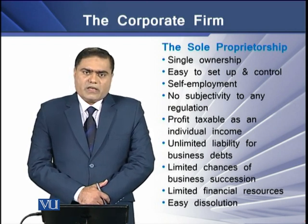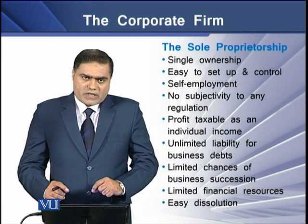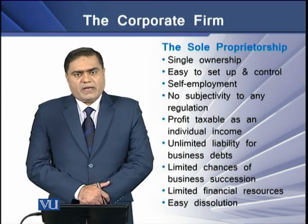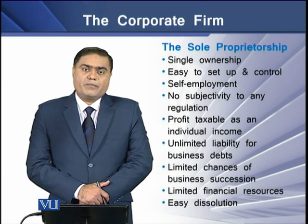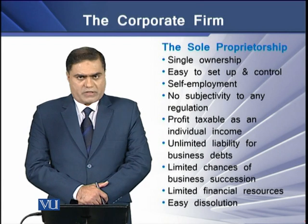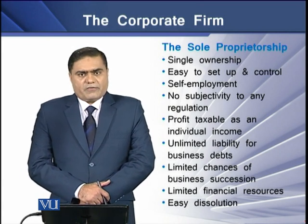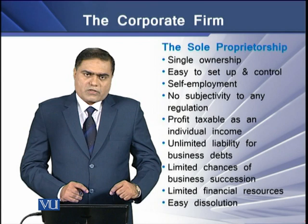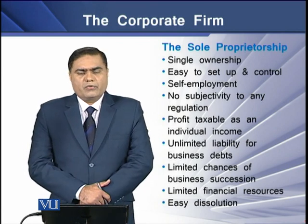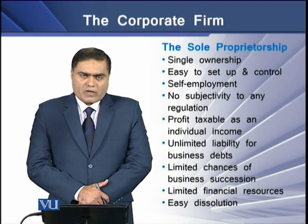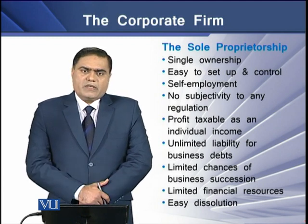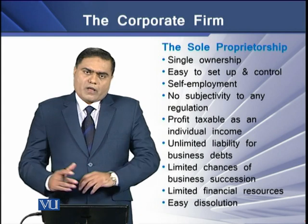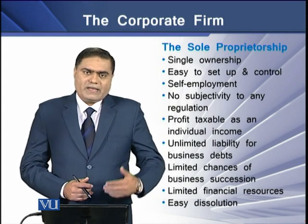The first is the limited life of the business. The life of the business is associated with the life of its owner. If the owner dies, this may end the life of the business. The second major drawback is unlimited liability. This means that if there are losses to the business, the personal property of its owner can be used in order to make good those losses. These two major disadvantages make a hindrance in the growth of a sole proprietorship firm.